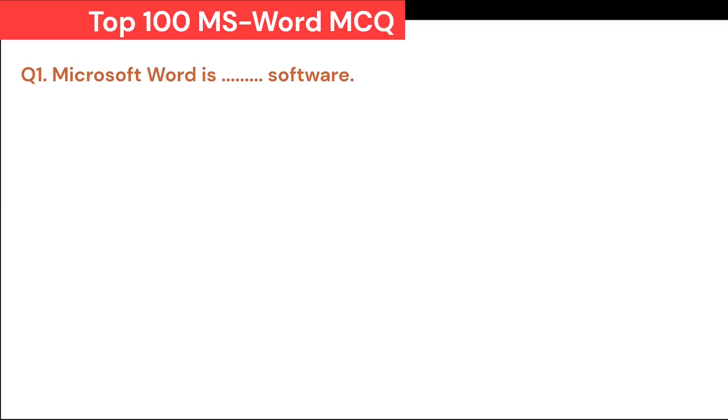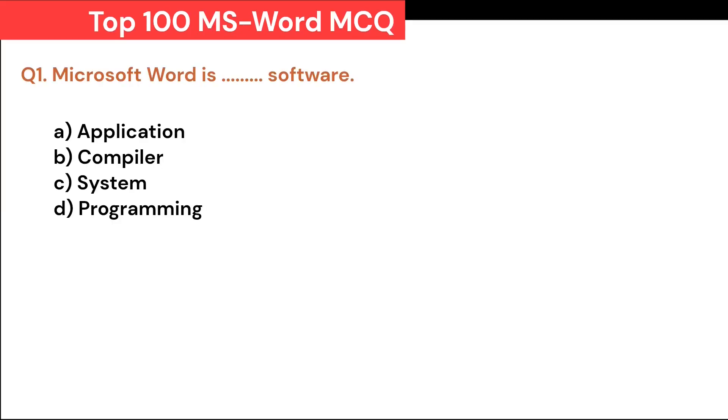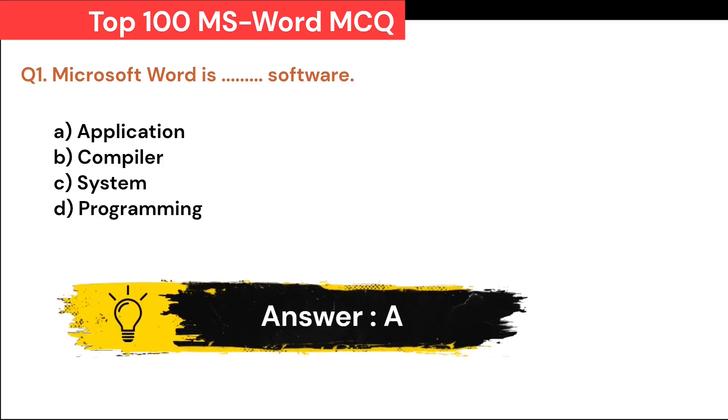Microsoft Word is Dash Software. A. Application. B. Compiler. C. System. D. Programming. Correct answer is A. Application.